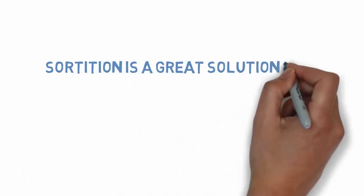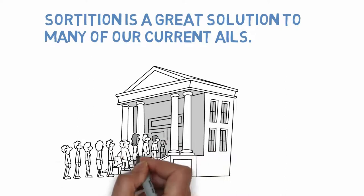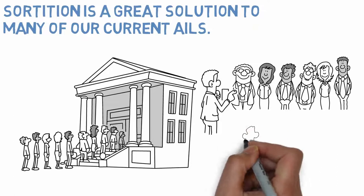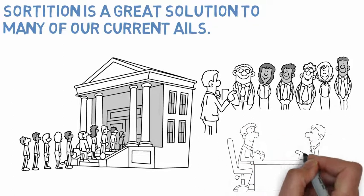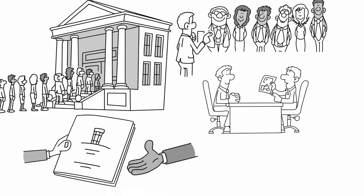Overall, proponents say that sortition is a great solution to many of our current ails. It enables a political system that is more representative of the general population. It promotes cognitive diversity, which is the idea that selecting random people of average intelligence to work at solving problems together is optimal over collecting the sharpest individual problem solvers.